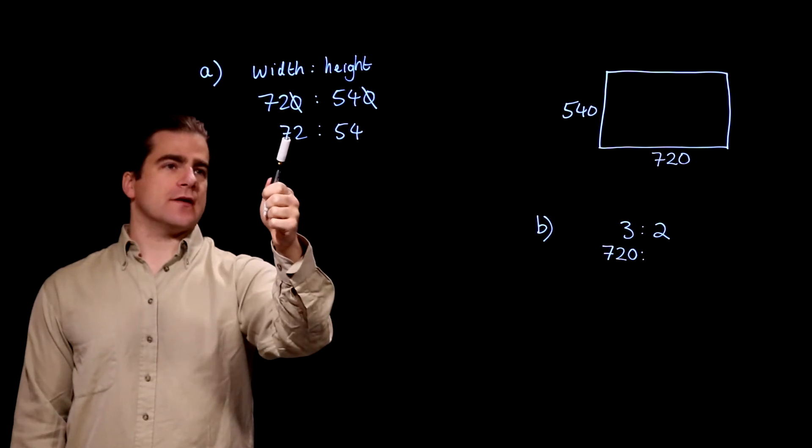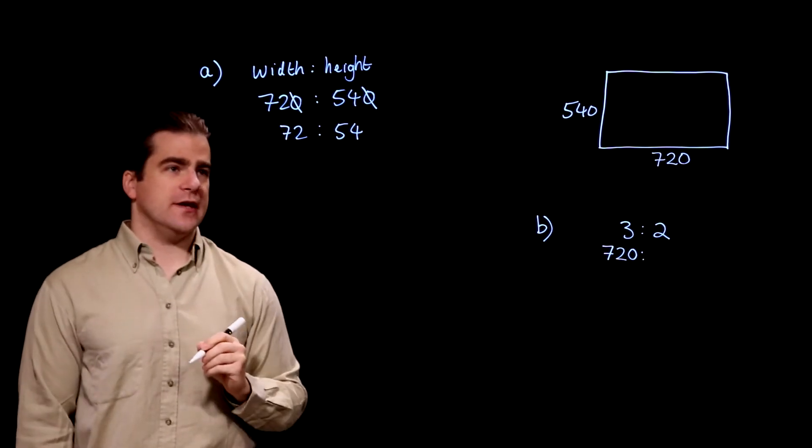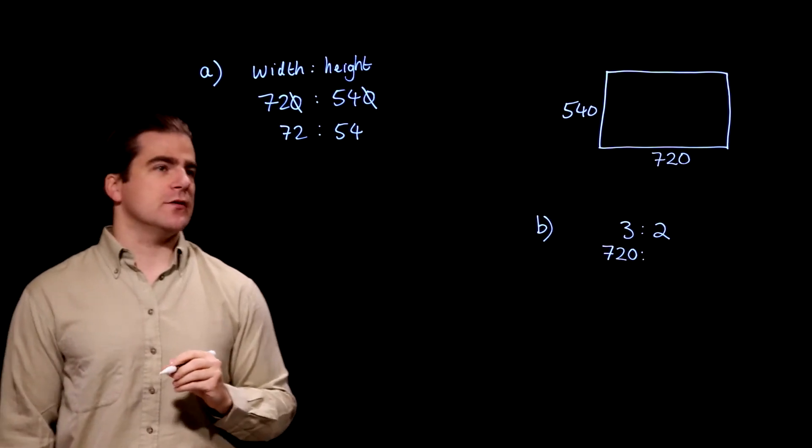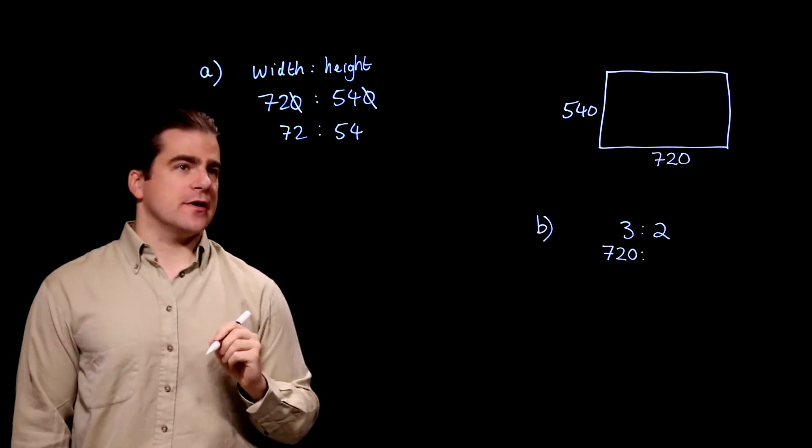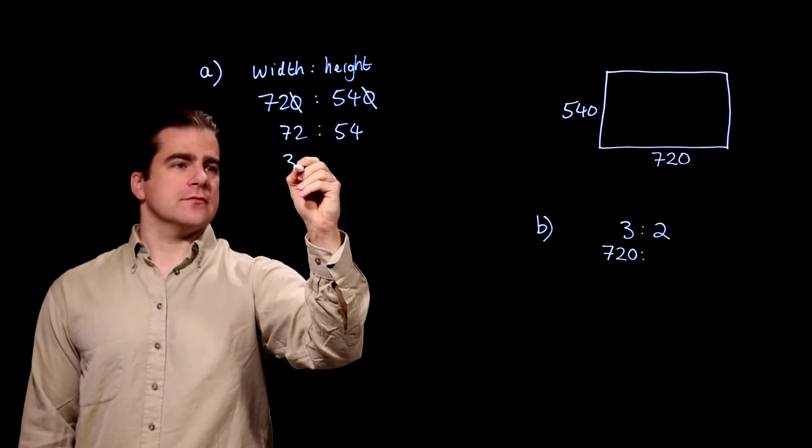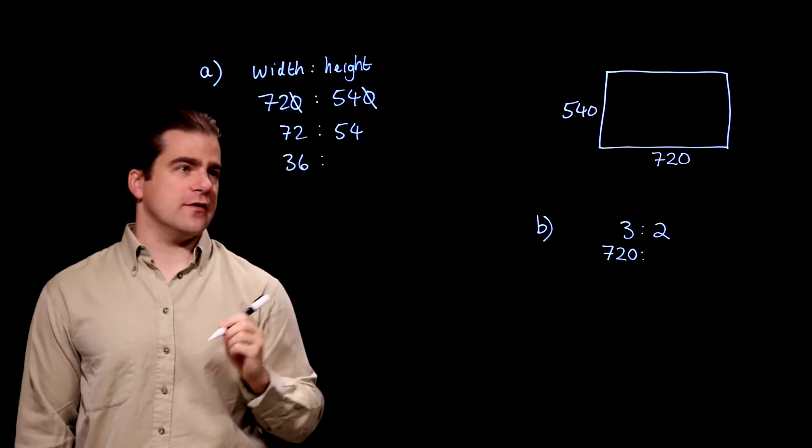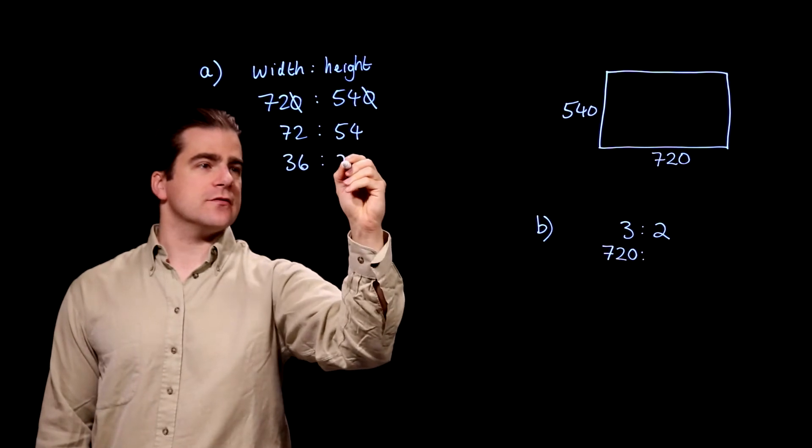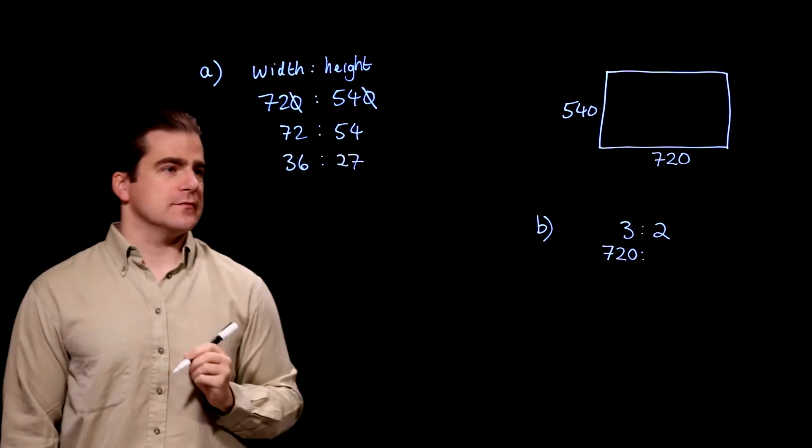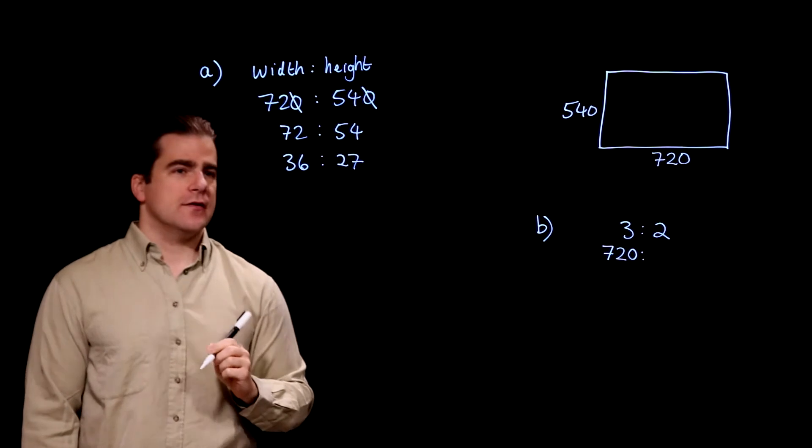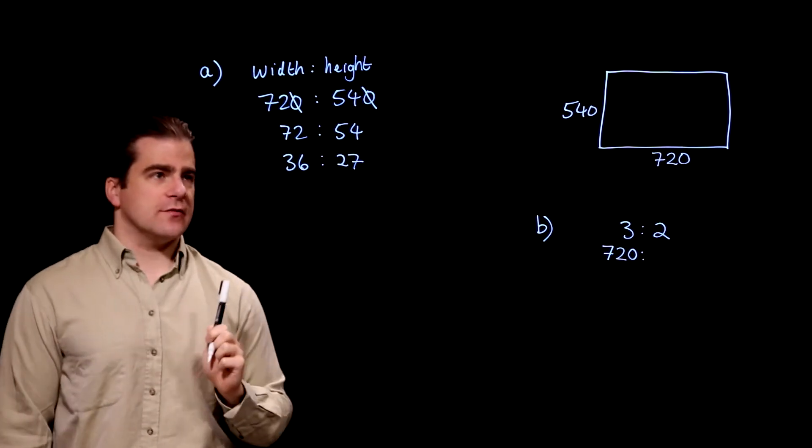What can we do next? Well, they're both even, so how about we divide both them by 2? 36 to half of 50 is 25, so half of 54 is 27. That's even, but that's odd. So we can't divide by 2.